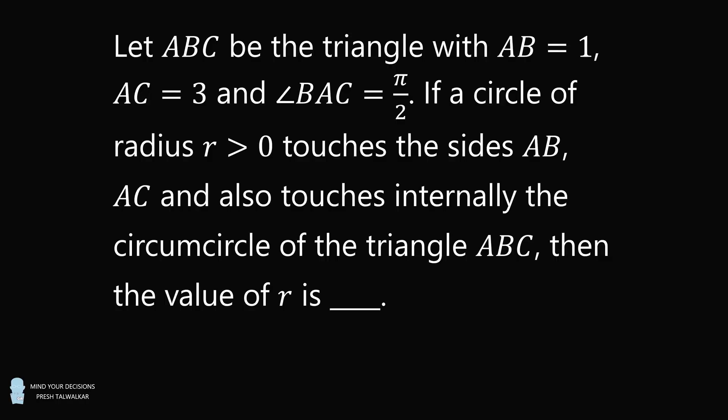Let ABC be the triangle with AB equal to 1, AC equal to 3, and angle BAC equal to pi over 2. If a circle of radius R greater than 0 touches the sides AB, AC, and also touches internally the circumcircle of the triangle ABC, then the value of R is blank.